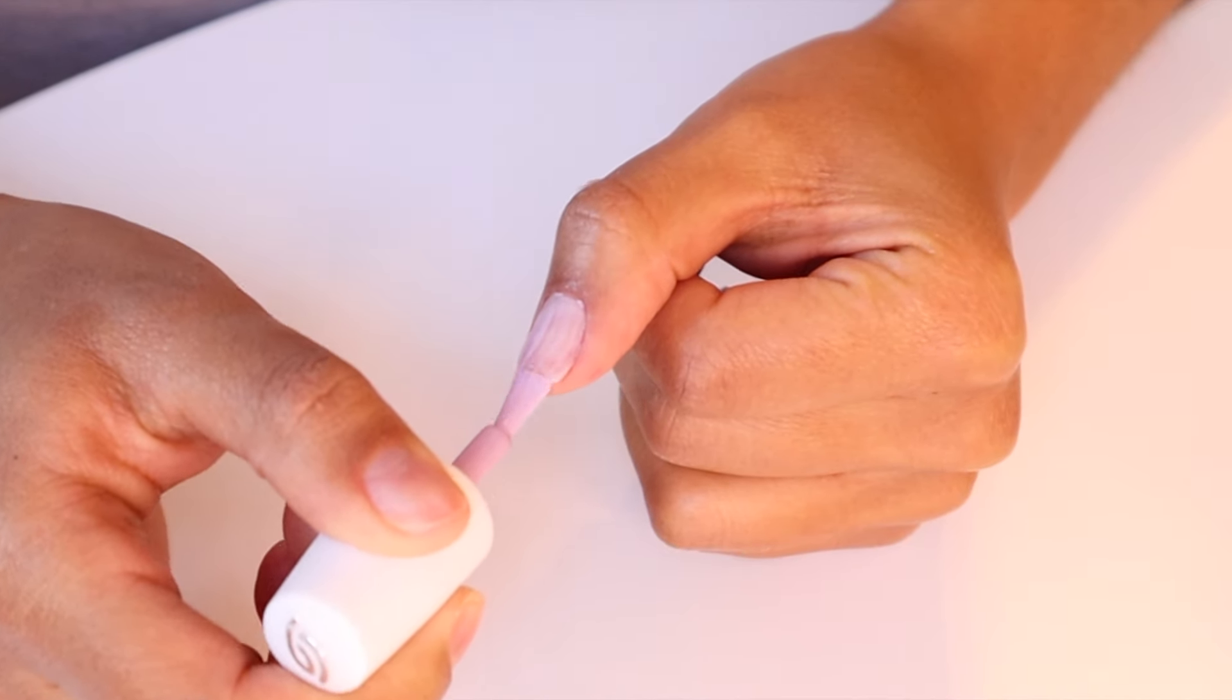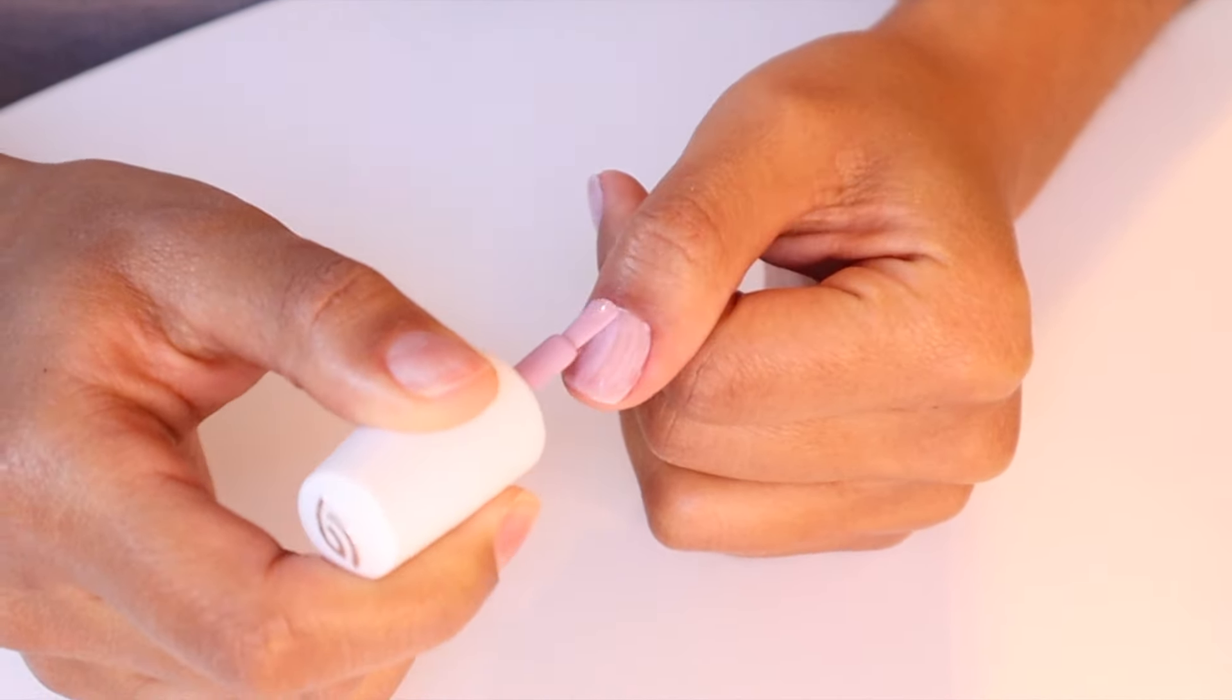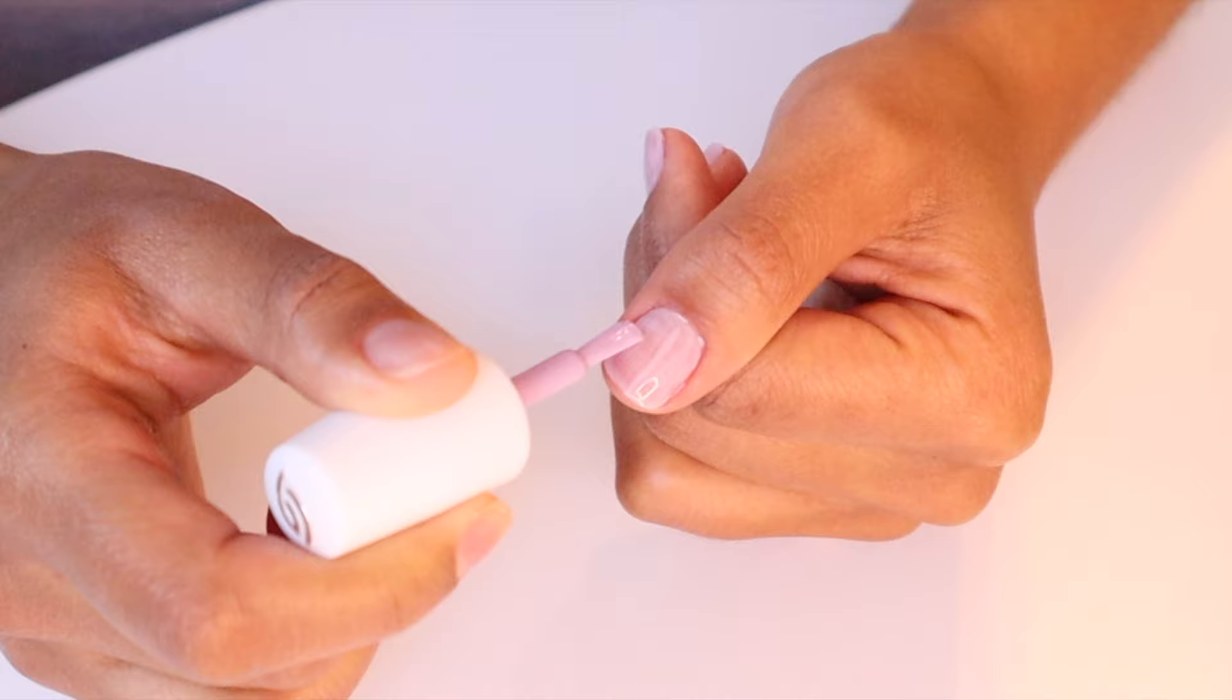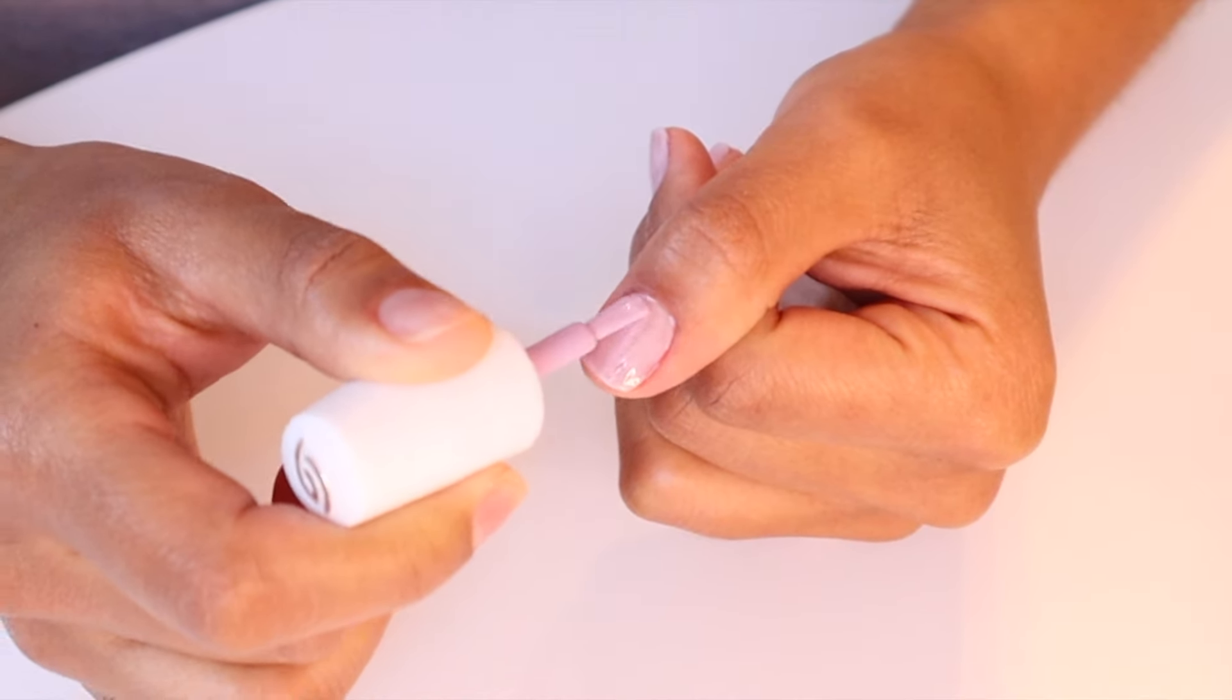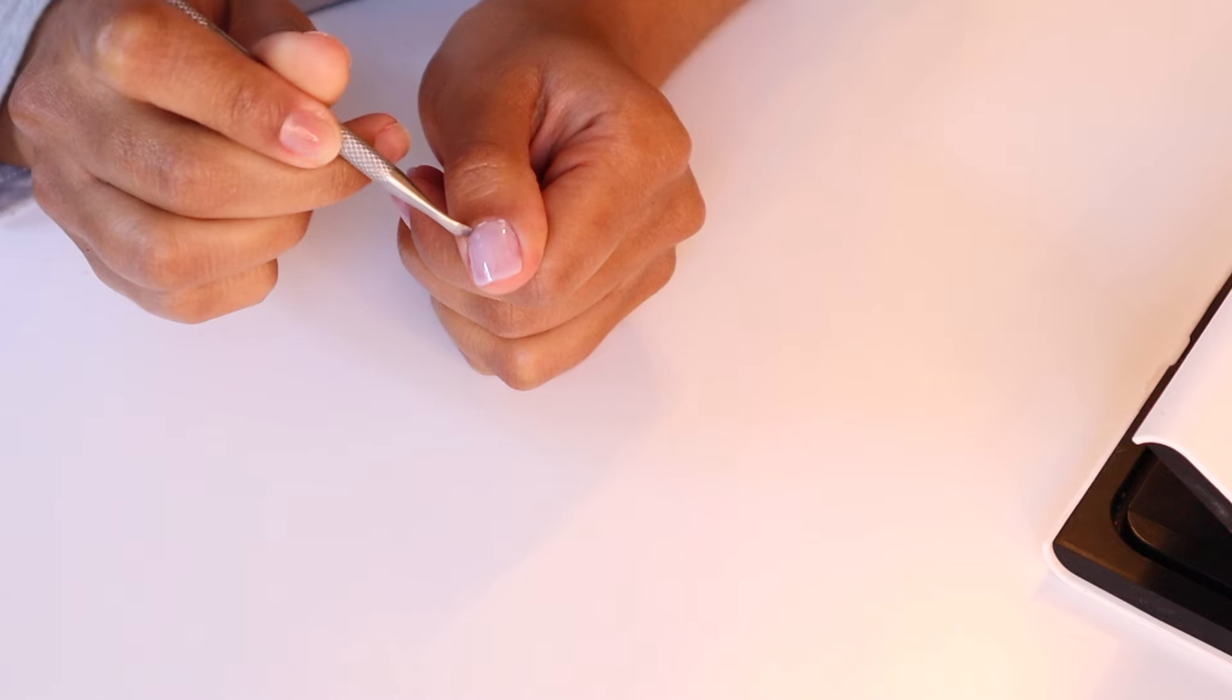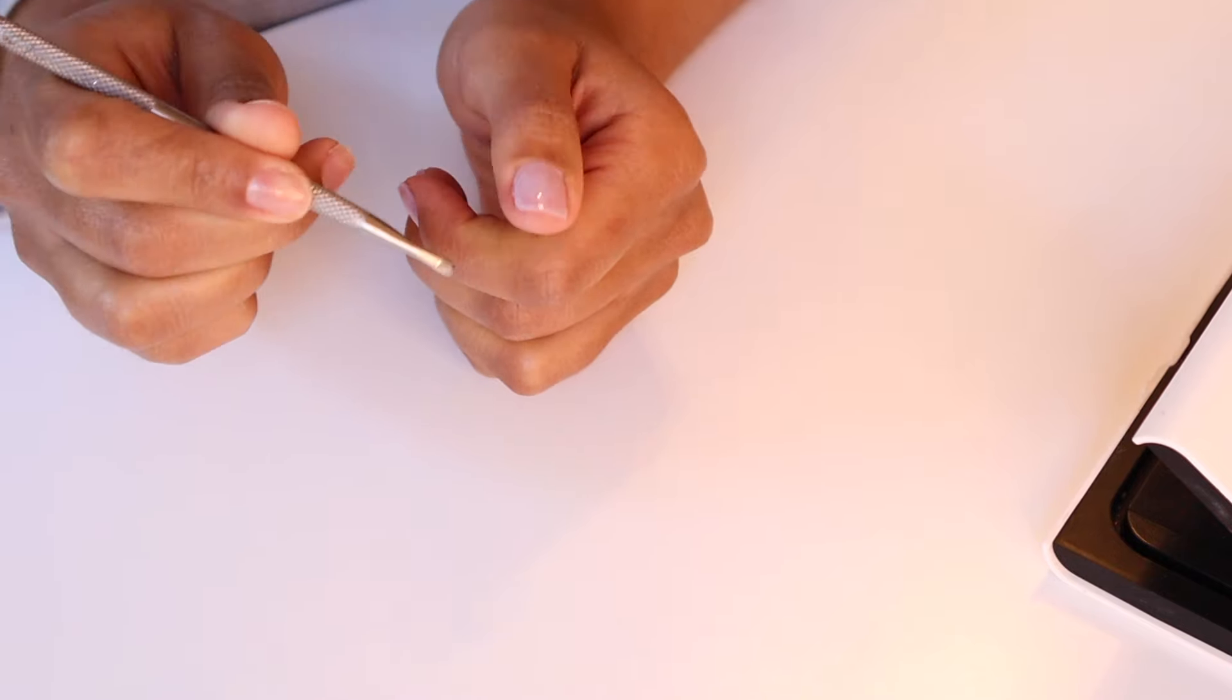So because I'm not too worried about staining with this color in particular, I'm going to skip that. But if you have it at home I definitely recommend you use it. As you can see here, I made a little mistake, so you can always fix it with a cuticle pusher just the way I did.